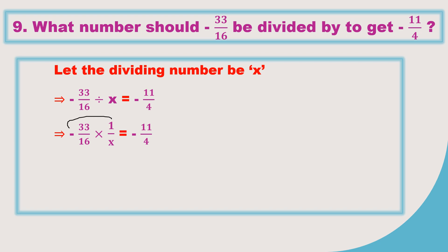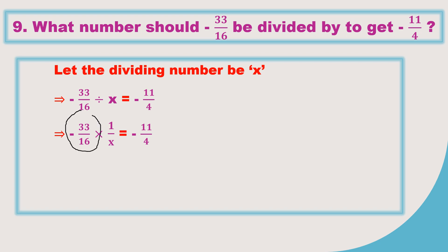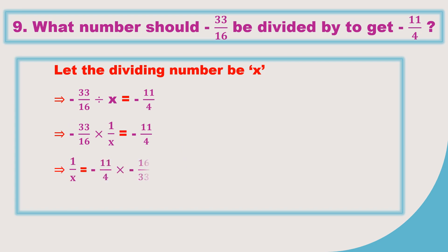Now you can multiply the numerators or shift minus 33 by 16 to the other side. When it is multiplying and you shift it there — transpose it — it becomes reciprocal. So 16 will be in the numerator and 33 will be in the denominator. But don't make a mistake in changing the symbol — whenever you transpose to the other side, the signs do not change.